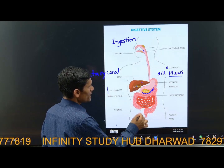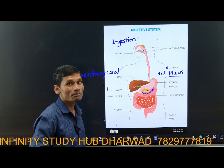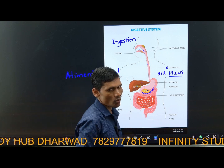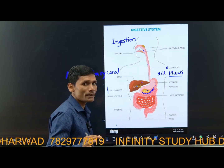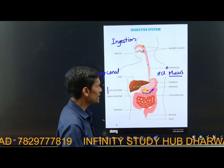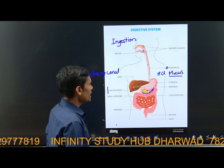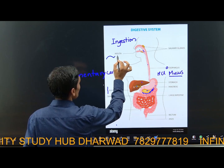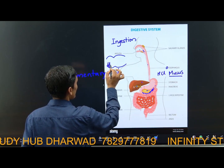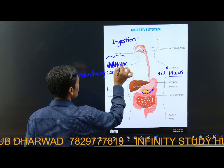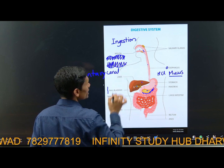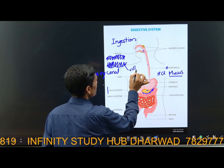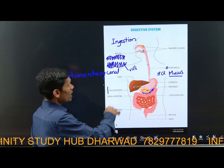The pancreas secretes pancreatic juice, which also contains enzymes including trypsin. Pepsin and trypsin help in the breakdown of protein. Complete digestion takes place in the small intestine. If you enlarge the small intestine, you will find thousands of finger-like projections called villi (singular: villus).